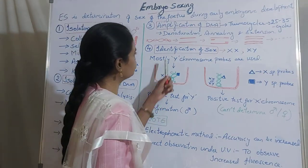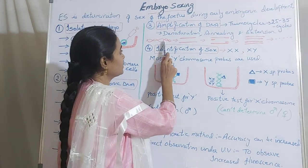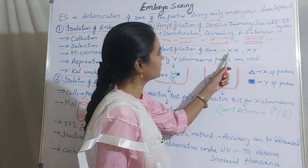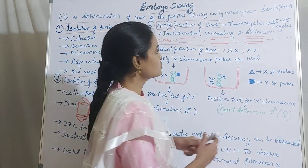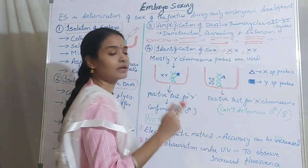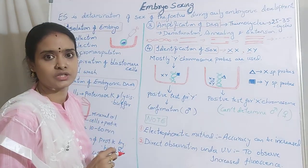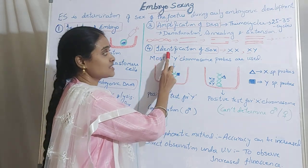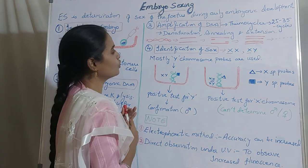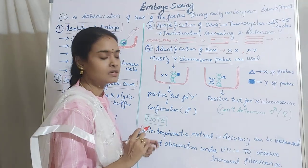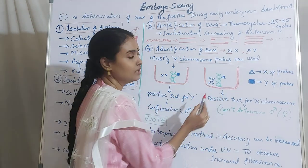The last stage is identification of the sex. Now you have the DNA, and DNA consists of chromosomes. In the female it is X and X, whereas in the male the chromosomes are X and Y. The common chromosome is X, which is present in both male and female progeny. So here identification of sex is done using Y chromosome probes — Y specific probes — because in both male and female DNA, the X chromosome is common.